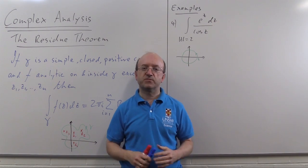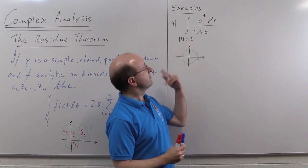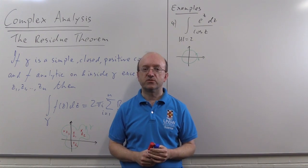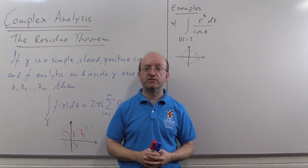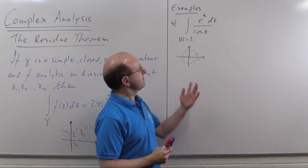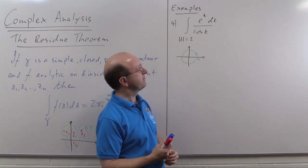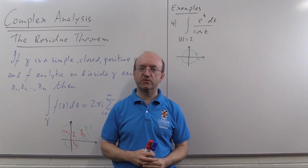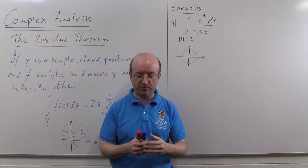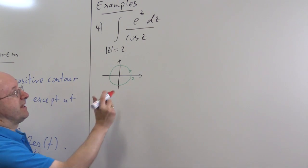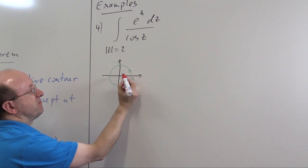Okay in this last example using the residue theorem we're going to look at integrating e^z/cos(z) around the circle |z| = 2 and the first thing we have to work out is where the singularities are. Well the singularities of the integrand will be the zeros of cos because e^z is analytic everywhere and we know that cos is 0 at odd multiples of π/2. So we'll have a singularity at π/2, π/2 is about one and a half so there's a singularity here at